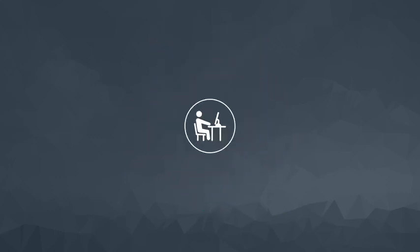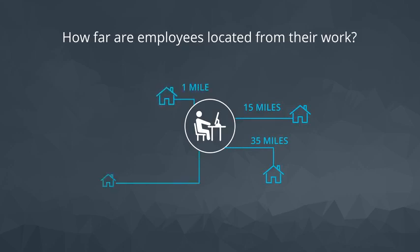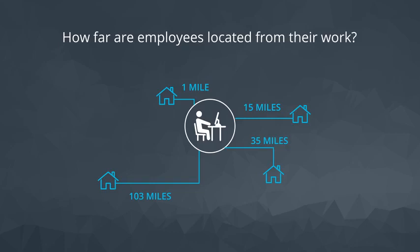As a quick mental picture, imagine we wanted to know how far employees were located from their place of work. One person might be 15 miles, another 35, another only one mile, and another might be remote and is 103 miles. We could aggregate all of these distances together to show that the average distance employees are located from their work is 18 miles.